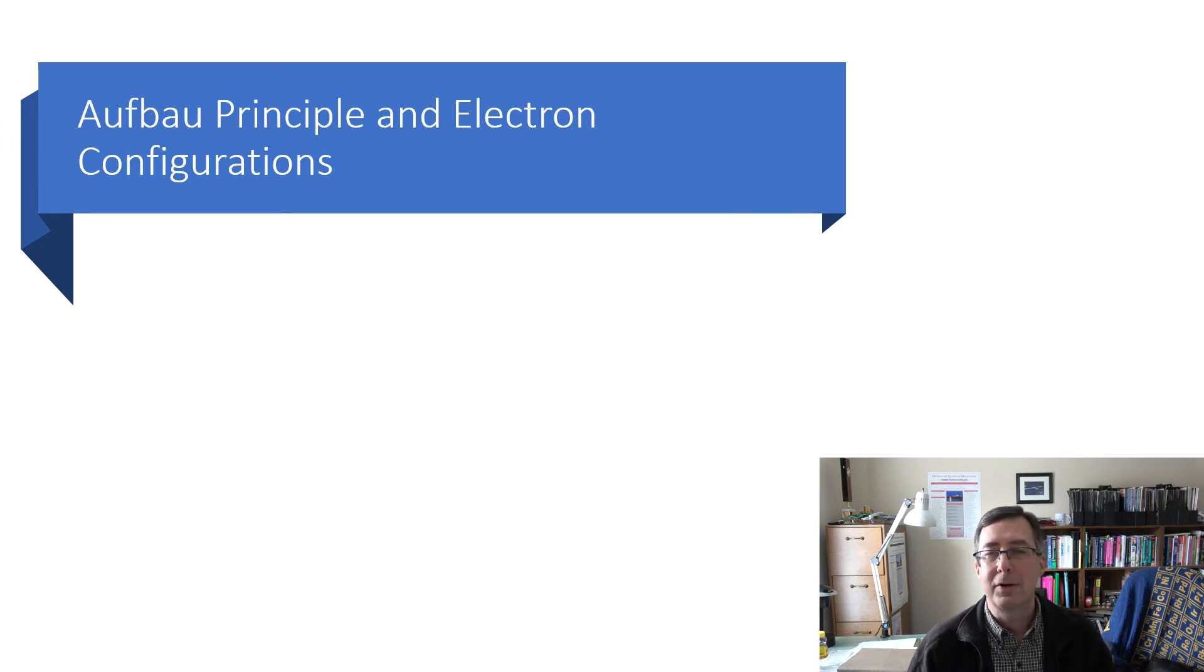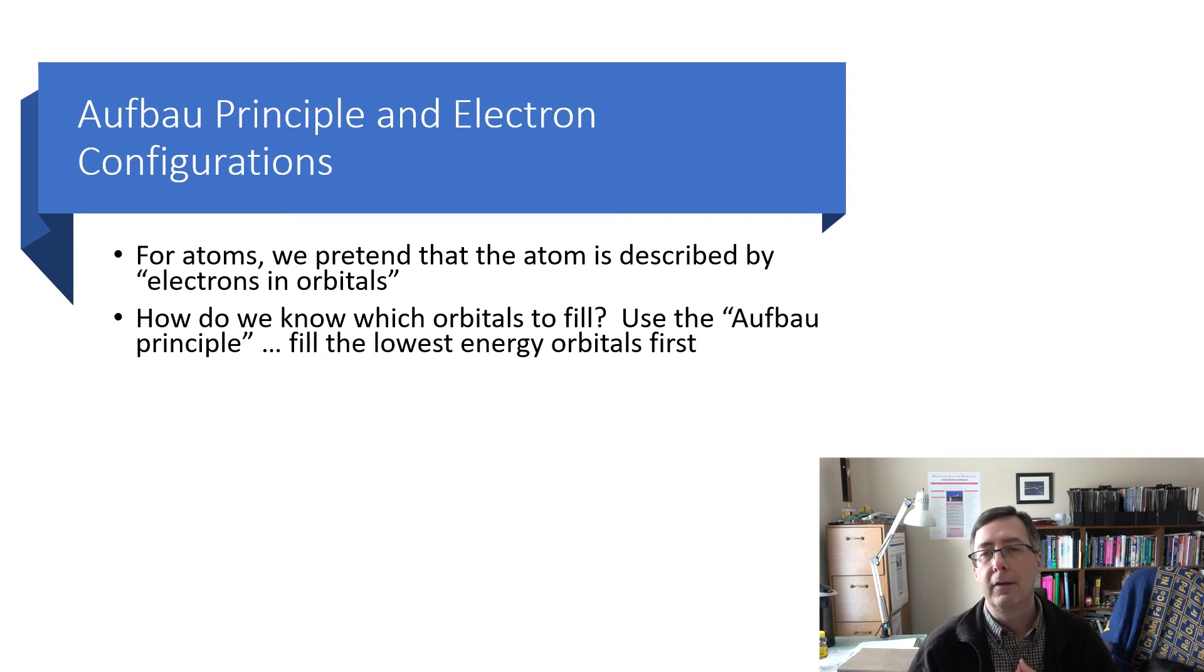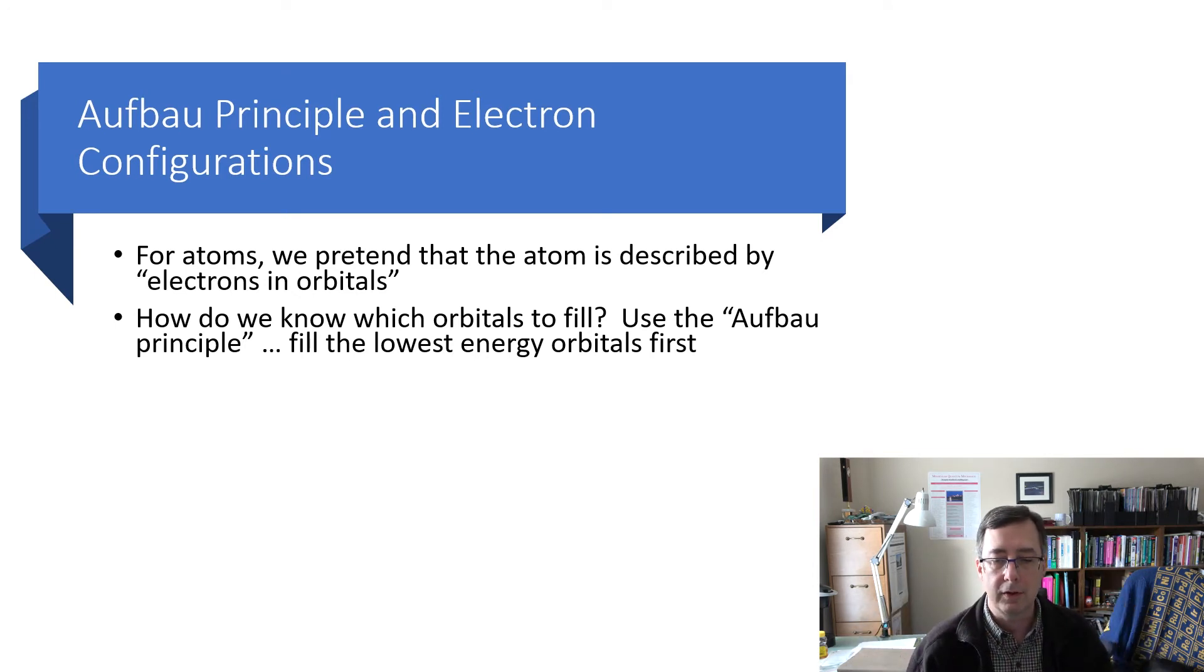So now let me remind you of the aufbau principle. This is something that's usually taught in freshman chemistry. But it's good to get a quick reminder of how this works. And then we'll talk about how this generalizes beyond atoms in a few moments. So first off, for atoms, we're going to pretend that the atom is described by electrons going in orbitals. We know that's not entirely true because the real wave function is some complicated multi-electron wave function. Then, if we are going to assume that, we have to know what orbitals do I put the electrons in?